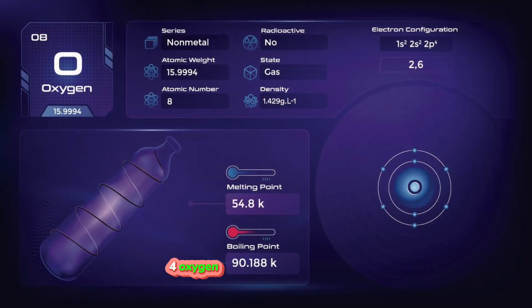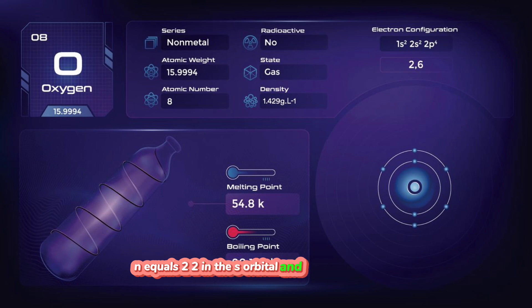4. Oxygen. Oxygen has eight electrons. Its electronic configuration is 1s² 2s² 2p⁴. Like carbon, two electrons are in the first energy level, n equals 1, in the s orbital, and the other six are in the second energy level, n equals 2: 2 in the s orbital and 4 in the p orbitals.